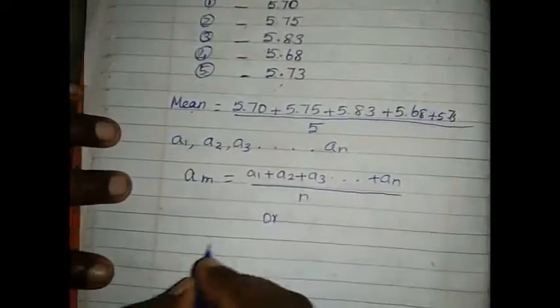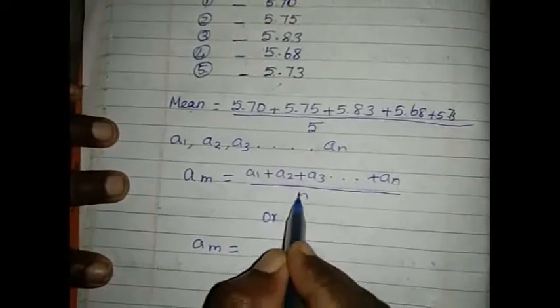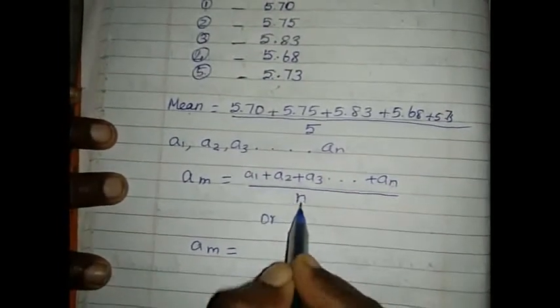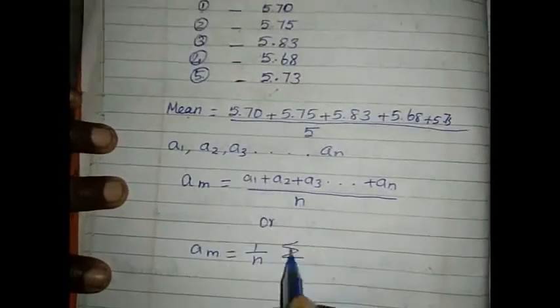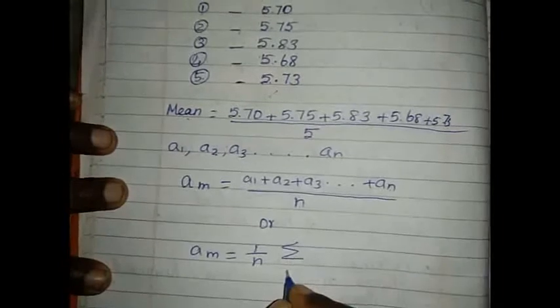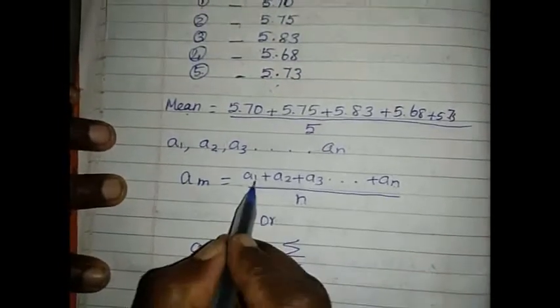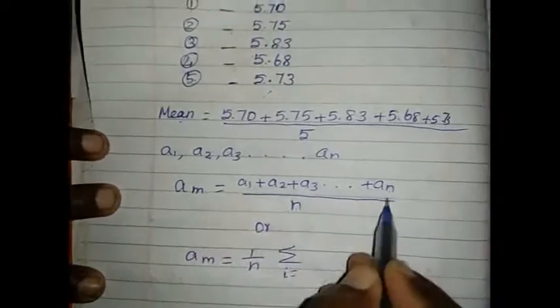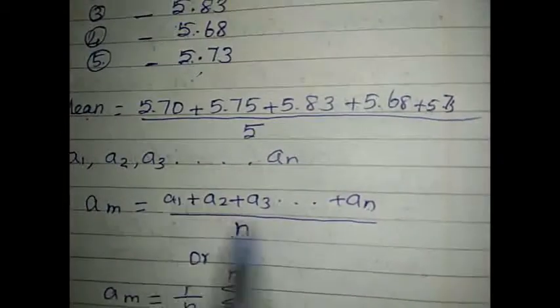Or, this we can write as am equal to, in the denominator n. So, 1 by n, summation, summation of i is equal to, i is the integer. Integer value varies from 1 to n. So, 1 to n, ai.